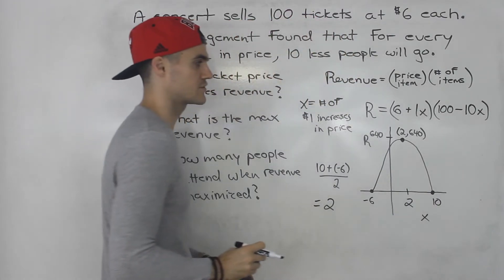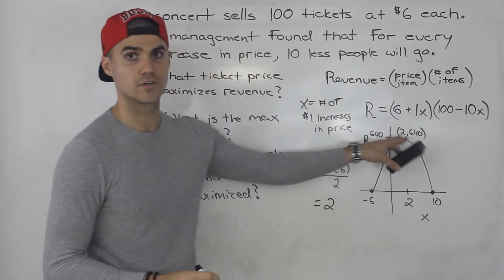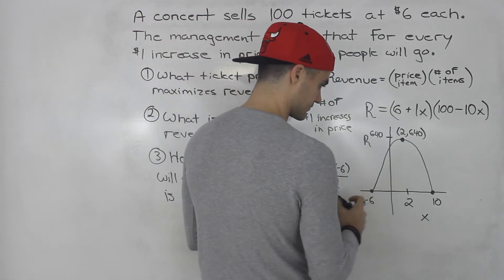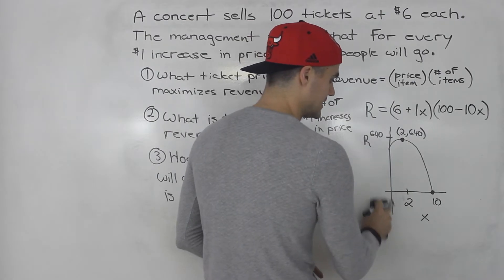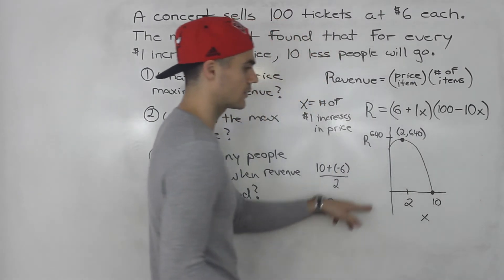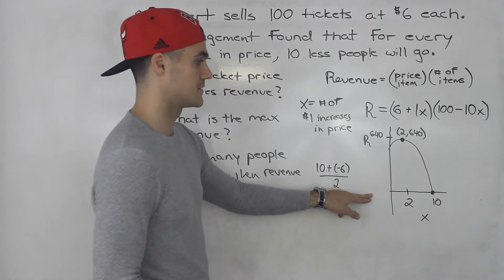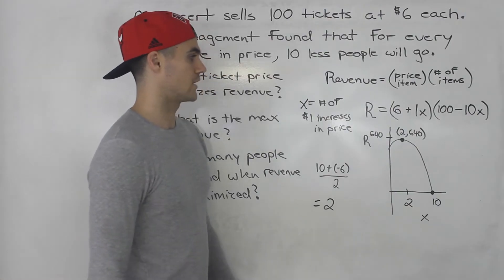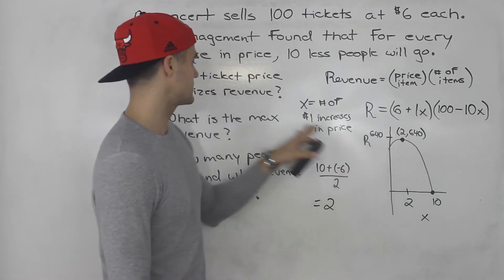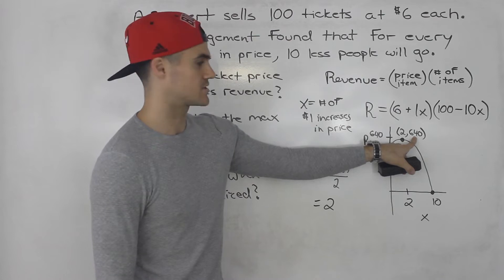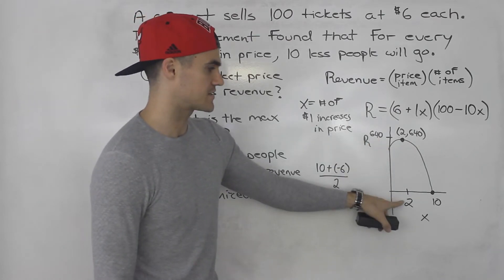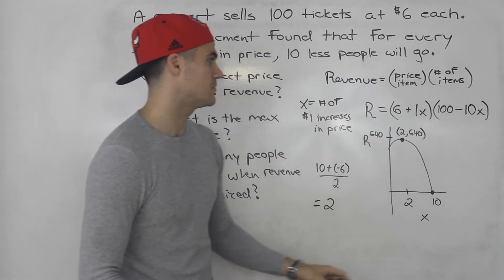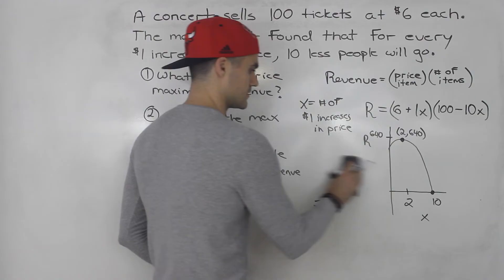We have the vertex of this revenue function here. Notice x can't be negative, so we would just ignore this part of the parabola. But we did need it in order to get that negative x-intercept and then be able to find the midpoint, which was 2. That is one way to do it. Once you have this, you can answer everything here. Once you have that vertex, we know what the maximum revenue is, the x value at which it happens, the ticket price, and number of people attending.